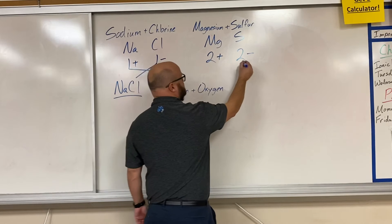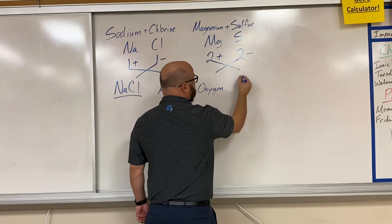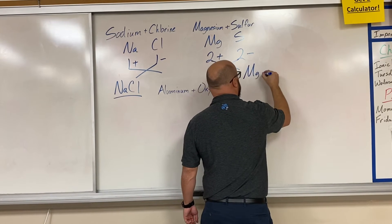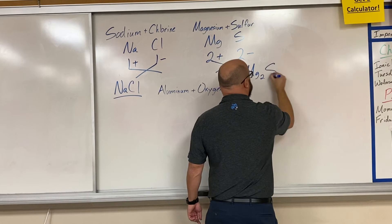Now criss-cross applesauce. The 2 goes to magnesium, this 2 goes to sulfur. We end up with Mg2S2.